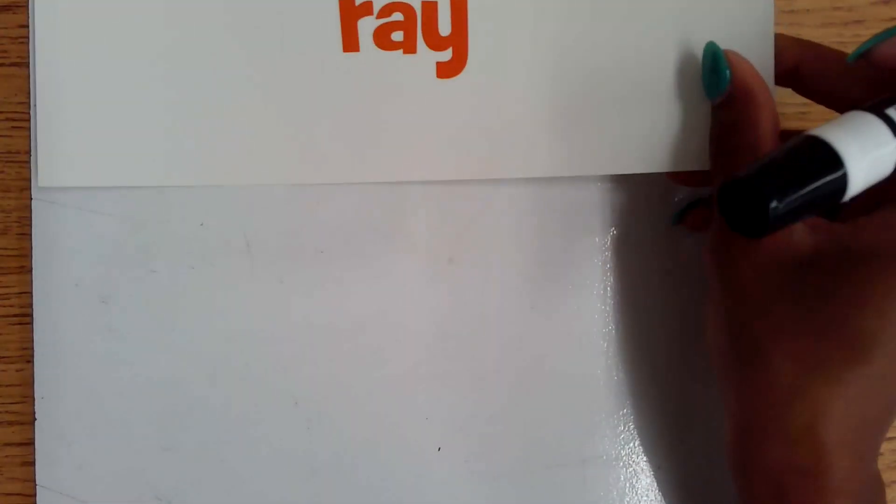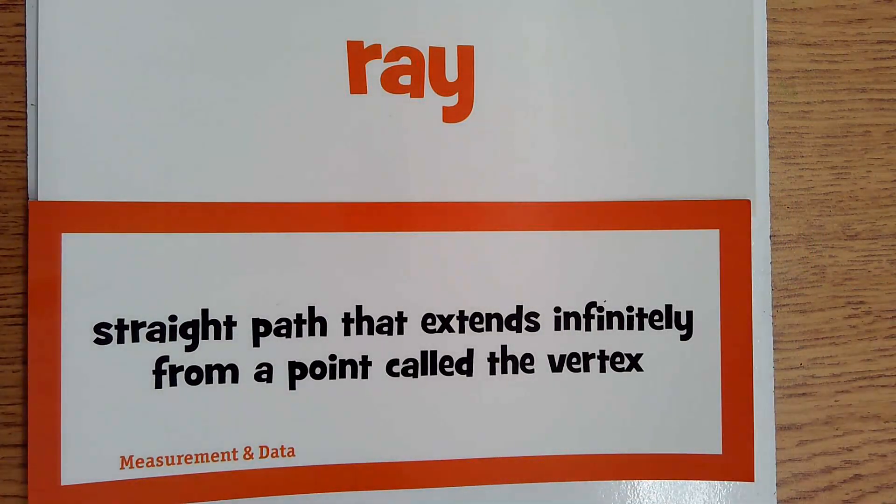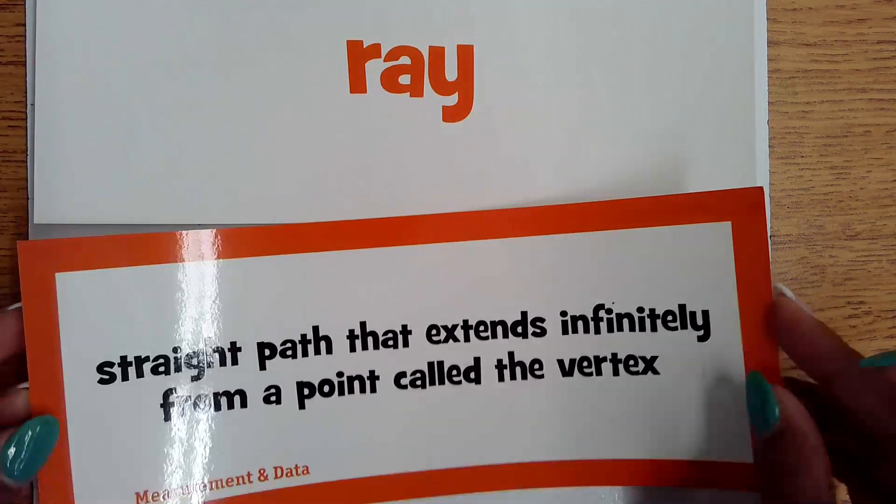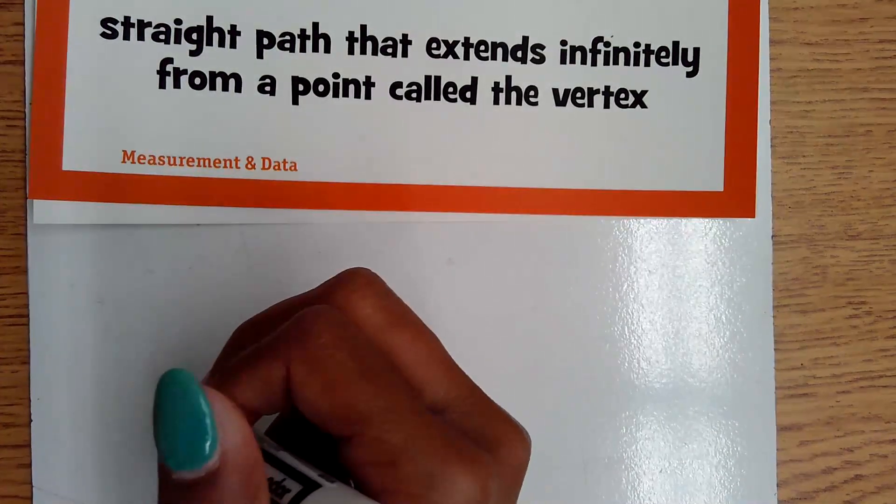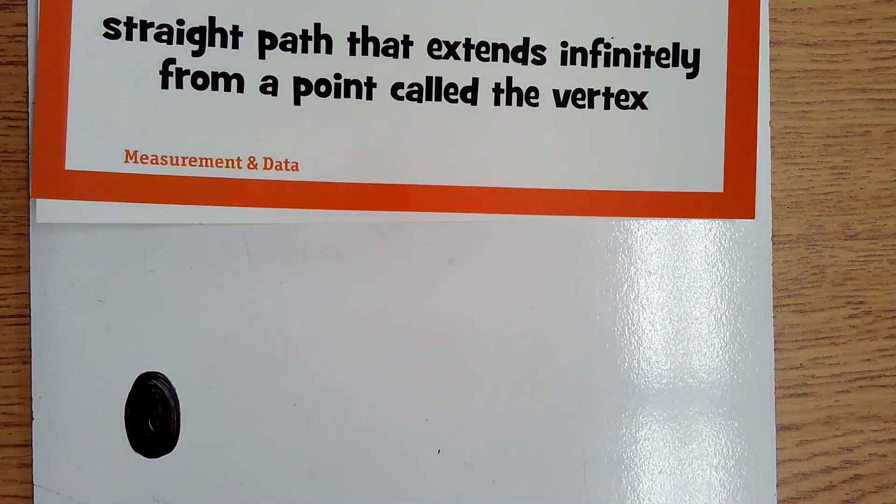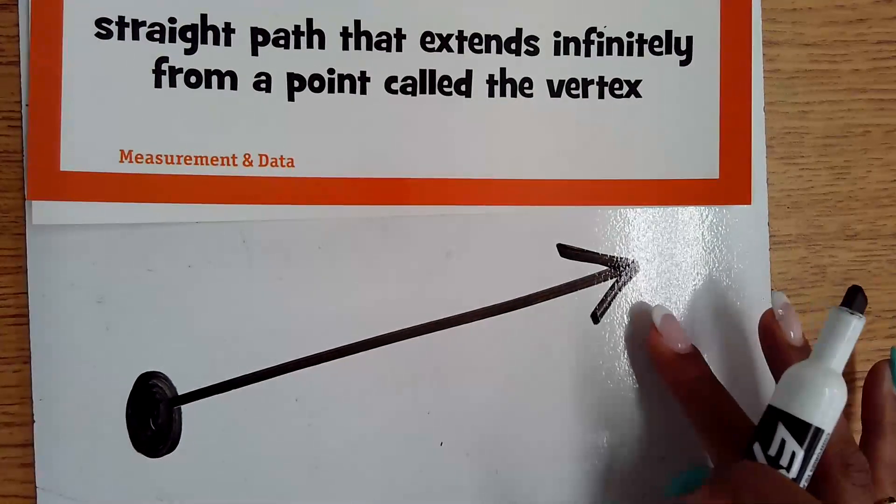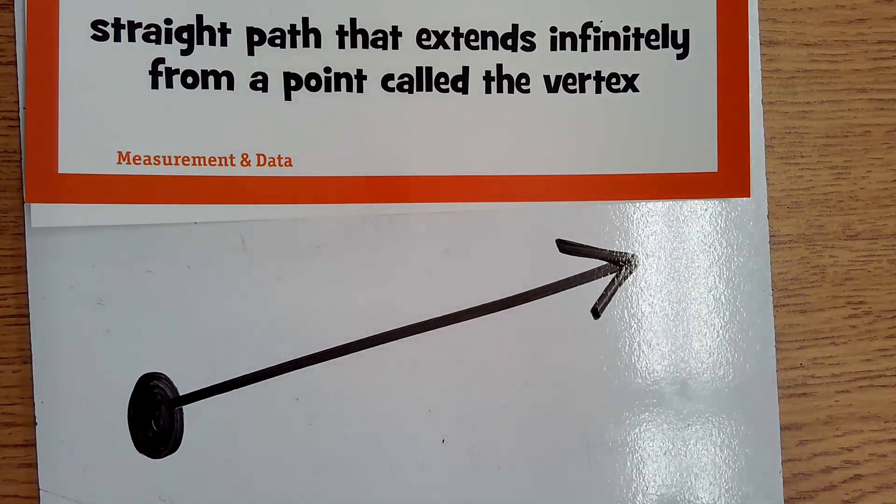Our next vocabulary word is a ray. A ray is a straight path that extends infinitely from a point called the vertex. So on one end of this ray, you're going to have a point, and this is called our vertex. The other side, you're going to have a line, and remember this arrow signifies it goes on forever and ever.